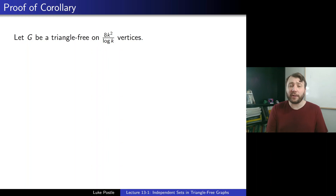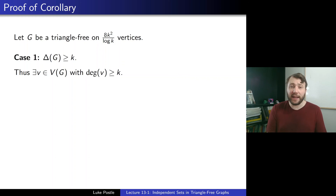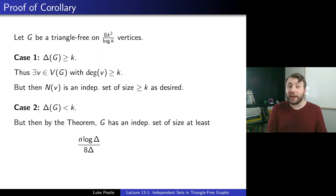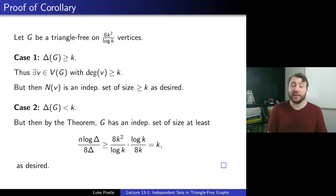Proof of the corollary: let G be a triangle-free graph on 8k²/log k vertices. Case 1: if delta(G) ≥ k, there's a vertex v with degree at least k, and N(v) is an independent set since G is triangle-free, giving an independent set of size at least k. Case 2: if delta(G) < k, we apply our theorem to get an independent set of size at least n log delta / (8 delta) ≥ (8k²/log k) · (log k / 8k) = k, as desired. So both cases yield a large independent set.